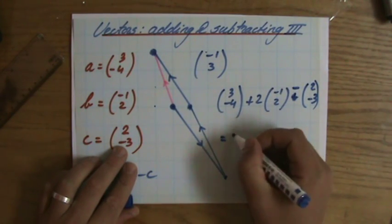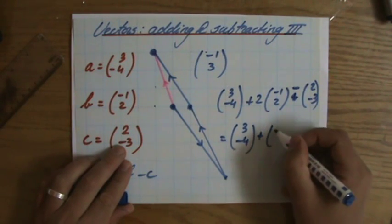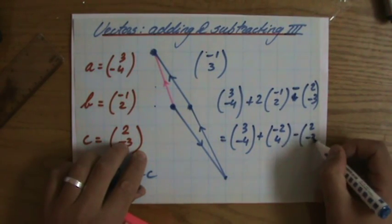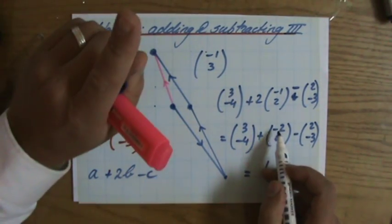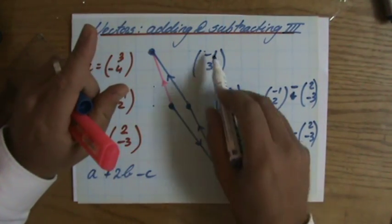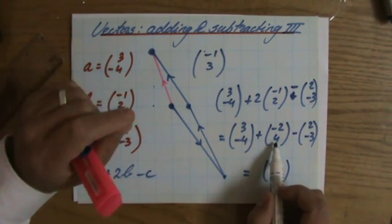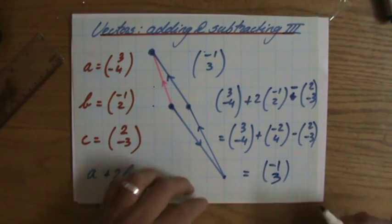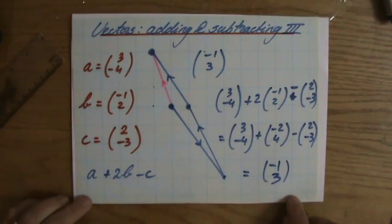Let's have a quick look. 3, -4, this becomes then -2, 4, minus 2, -3. So the outcome is 3 plus -2, that is 1, minus 2 is -1. So that's good. And now I should get a 3. -4 plus 4 is 0, minus -3. Very nice. That's a 3. -1, 3.